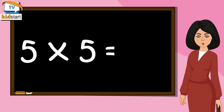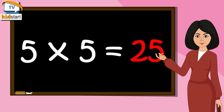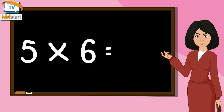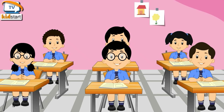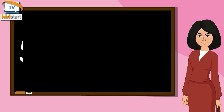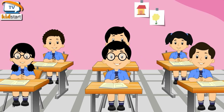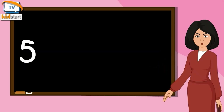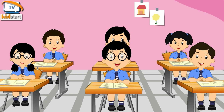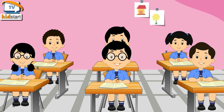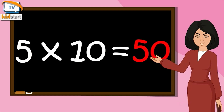Five fives are twenty-five. Five sixes are thirty. Five sevens are thirty-five. Five eights are forty. Five nines are forty-five. Five tens are fifty.